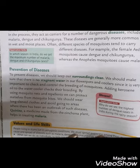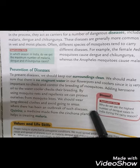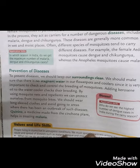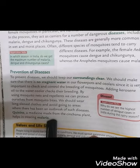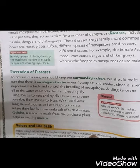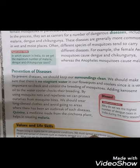We should wear long-sleeved clothes and avoid going to areas where there has been an outbreak of such diseases. Covering hands and legs with full-sleeved clothes and full-length pants prevents mosquito bites. Quinine, a medicine made from the cinchona plant, helps in treating malaria. Here we have studied about the prevention of water-borne diseases like malaria, which is caused by mosquitoes.